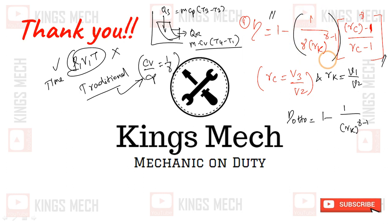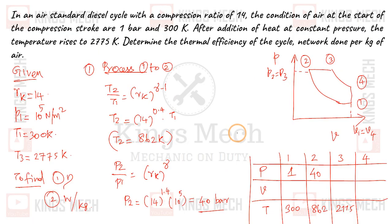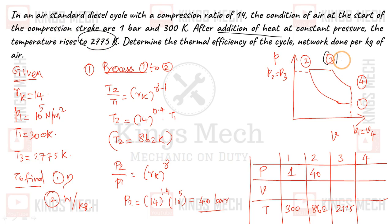The option and choice is yours — either use the formula-based approach or the traditional concept-oriented method to solve the problem. For example, in this exercise, after the addition of heat at constant pressure the temperature rises to 2775 Kelvin, meaning T3 is given at the end of constant pressure heat addition.